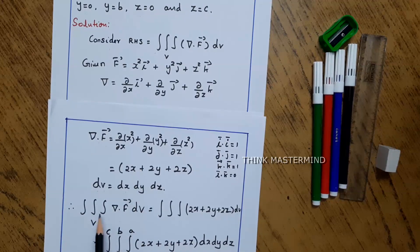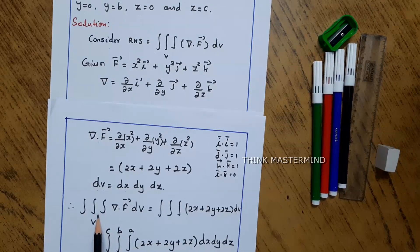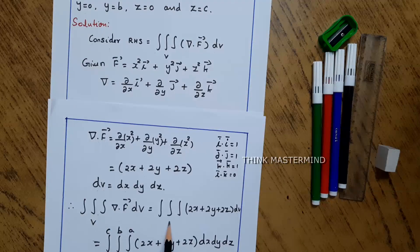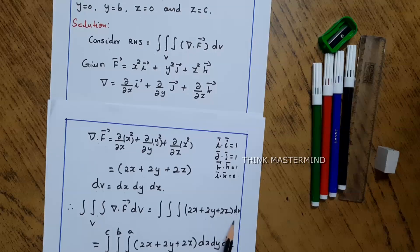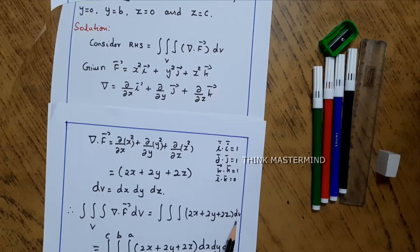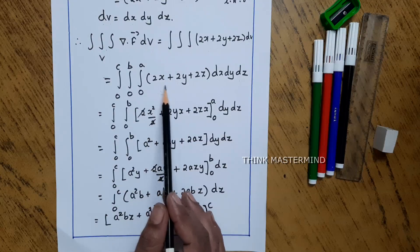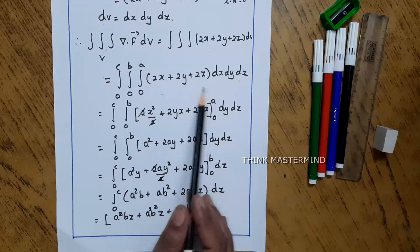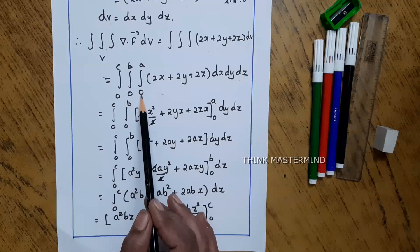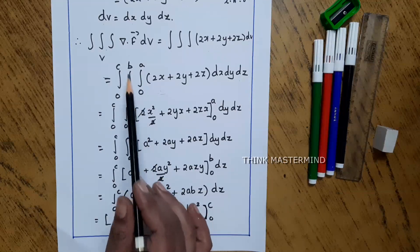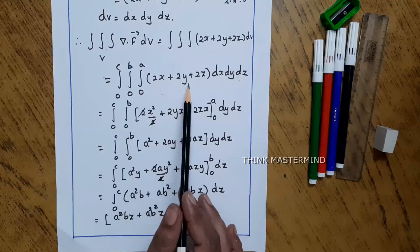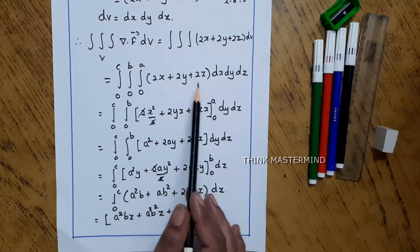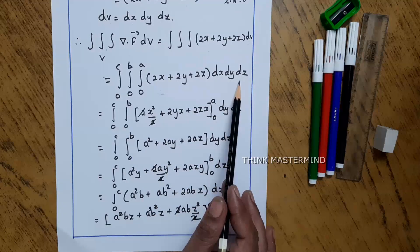Substituting into the right hand side of the Gauss Divergence Theorem, we write the triple integral of (2x + 2y + 2z) dV. Using the range of x, y, z from the cuboid, this becomes the integral from 0 to a, 0 to b, 0 to c of (2x + 2y + 2z) dx dy dz.